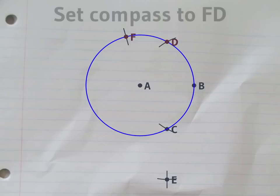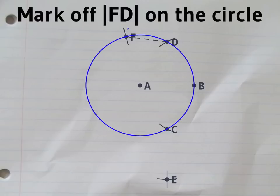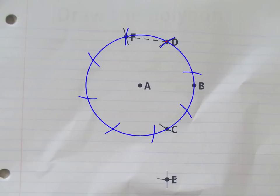So, redraw the original circle and set your compass to the distance between D and F. That distance is exactly the length of the edges of the regular octagon.